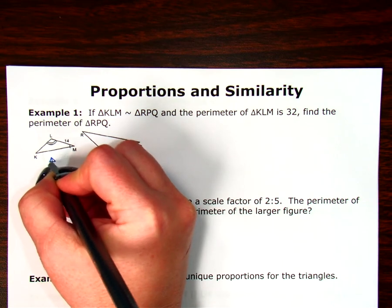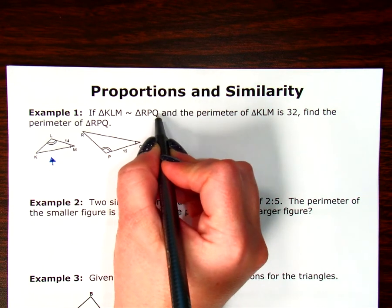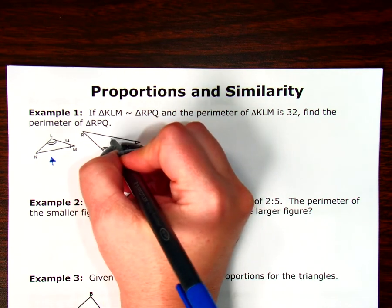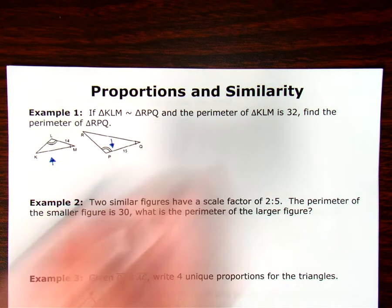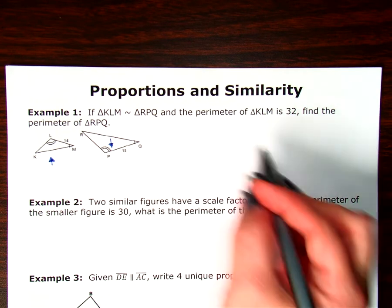So in my triangle KLM, that's always going to be my up triangle, my numerator triangle. And RPQ, I'm going to make that my denominator triangle, my down. Everything's going to go in the bottom of the ratios or the bottom of the fractions. Let's see what else we need to label.